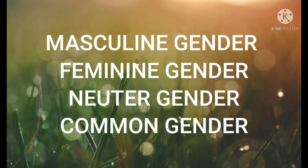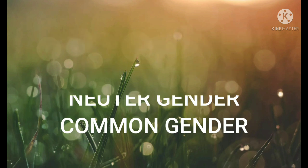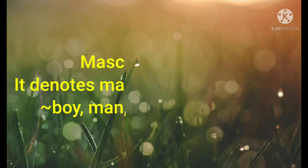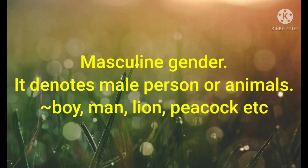Now let's see what these genders are. Masculine gender: it denotes male persons or animals, like boy, man, lion, peacock, etc. That means masculine gender talks about male persons or animals. Now let's see what feminine gender is.